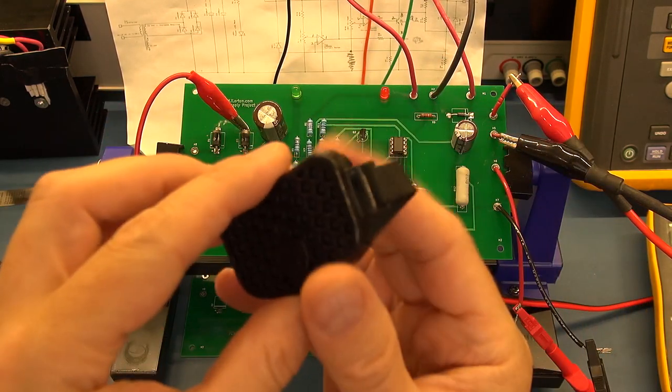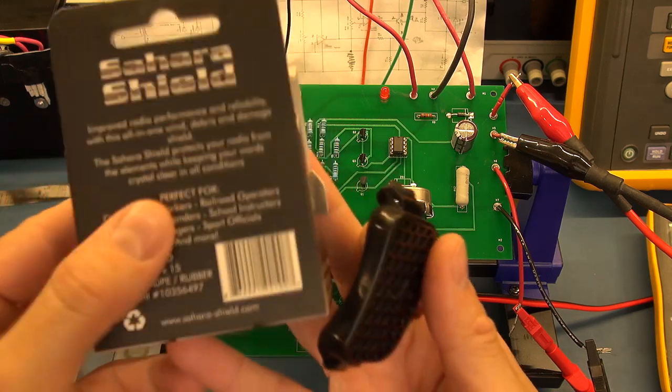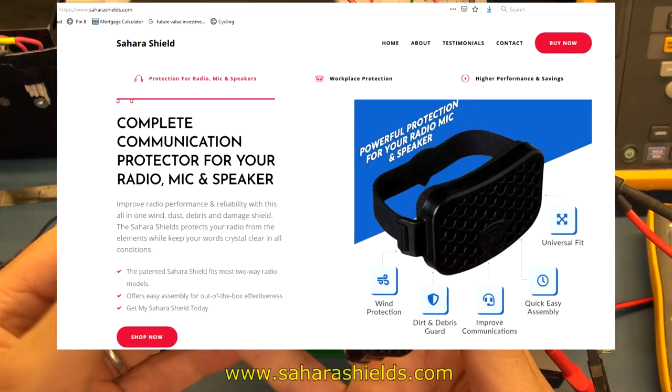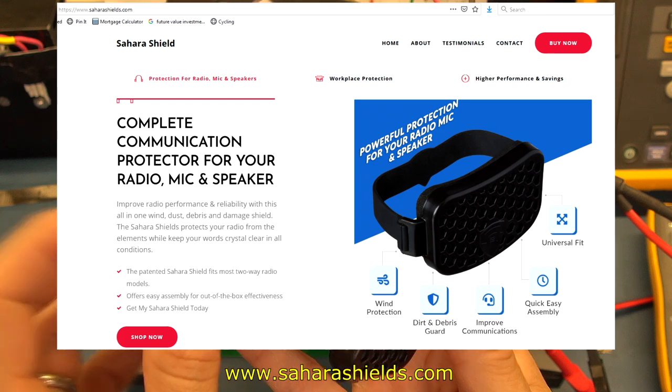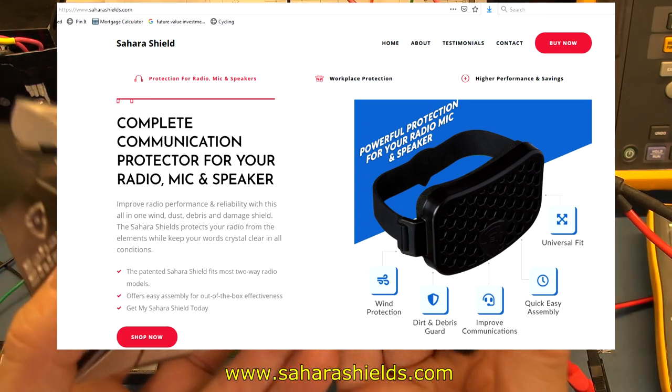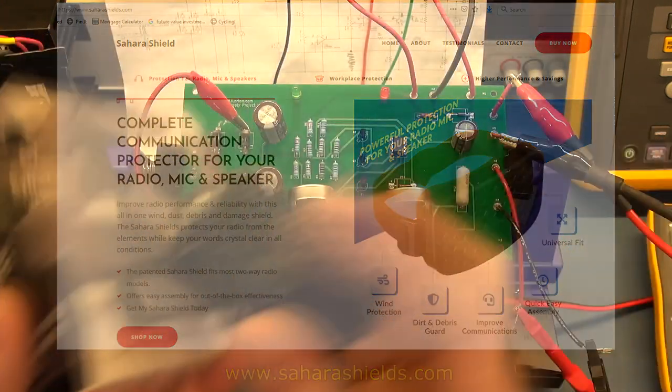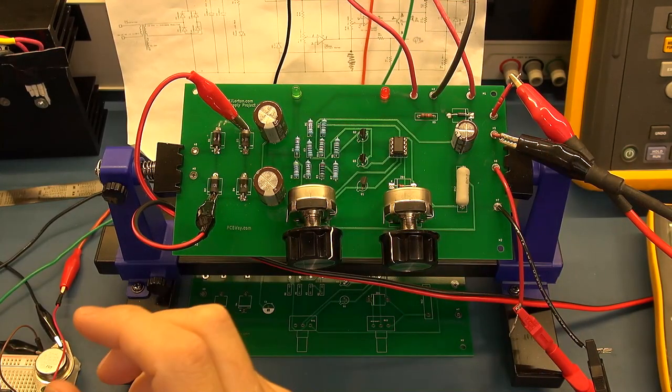What I will do in the meantime, I'm going to, you've obviously got the name here. It's called the Sahara Shield. I'm going to give you the website details as well. So if you want to go ahead and have a look, perhaps go and purchase one ahead of the review. You can, but I certainly will review it to see how effective it is. So thanks very much to Ian for sending that in.